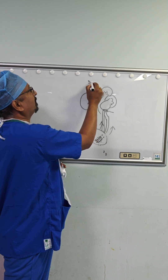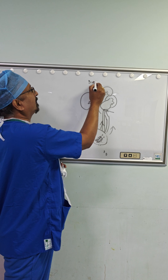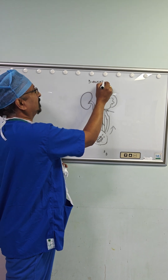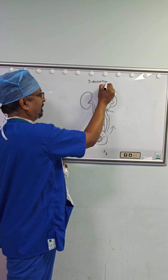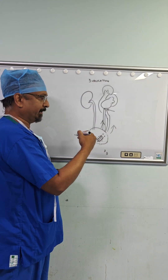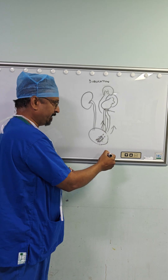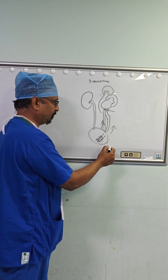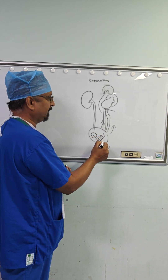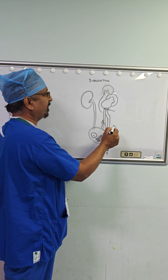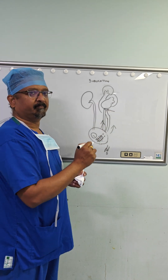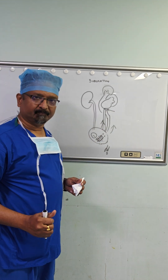So, duplication anomalies are problems which can cause multiple issues: like an ectopic ureter which opens outside, or a bulge inside the bladder called a ureterocele, or a reflux, or a PUJ obstruction. Thank you.